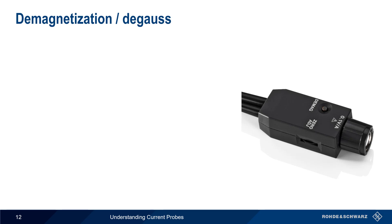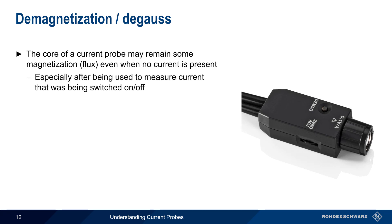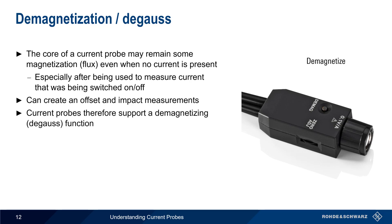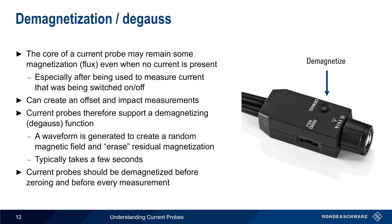Another potential issue is that the ferromagnetic core of the probe may retain some magnetism or flux, even when there's no current present. This is not uncommon after a probe has been used to measure a current that was being switched on and off. This residual magnetism can lead to an offset and impact measurement results. Current probes therefore support a degauss function that can be performed either from the probe itself or via the scope's user interface. A special waveform is generated that creates an essentially random magnetic field, erasing any residual magnetism in the probe — a very quick process that only takes a few seconds. It's a good idea to degauss the probe both before zeroing and before making any measurements.